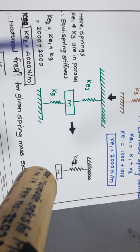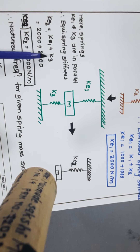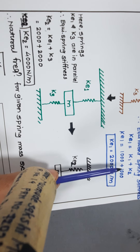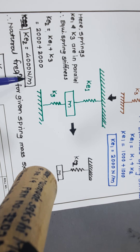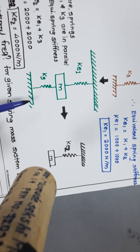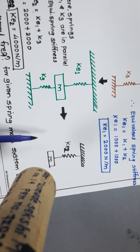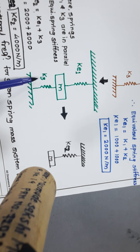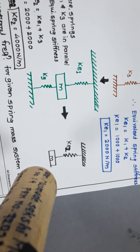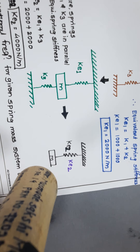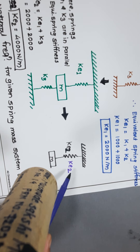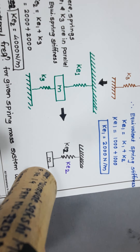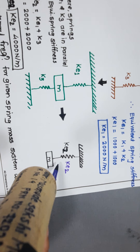The equivalent spring stiffness for ke1 and k3 in parallel is: ke2 = ke1 + k3 = 2000 + 2000 = 4000 N/m. We replace the entire system with a single equivalent spring ke2 and mass m, giving us the total equivalent single spring-mass system.